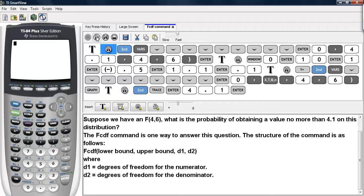The fcdf command is one way to answer this question, and the structure of the command is as follows. You activate the fcdf, you type in the lower bound, the upper bound, the degrees of freedom for the numerator, and the degrees of freedom for the denominator. And these are separated by commas.